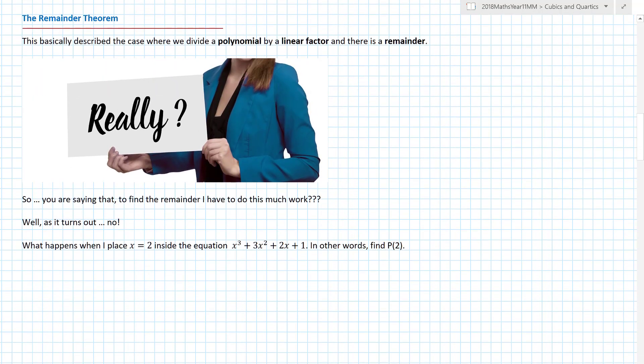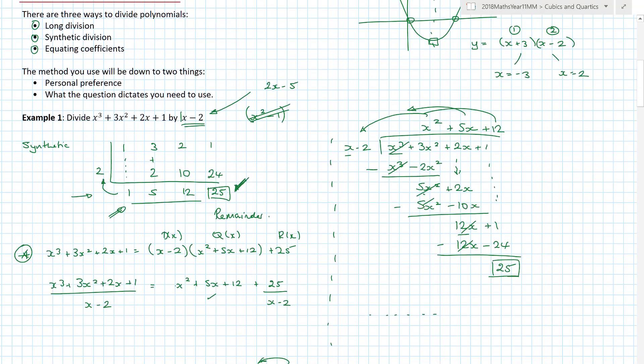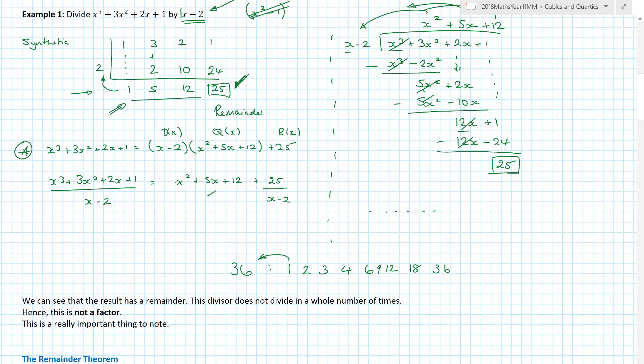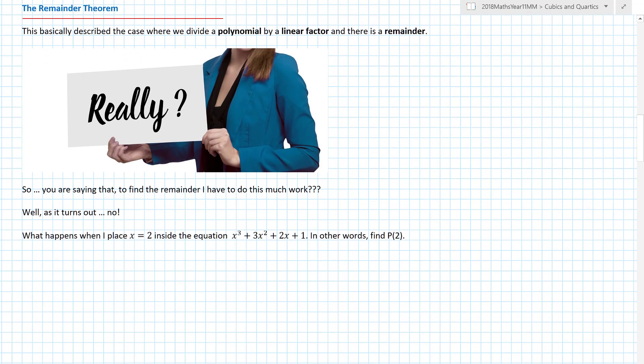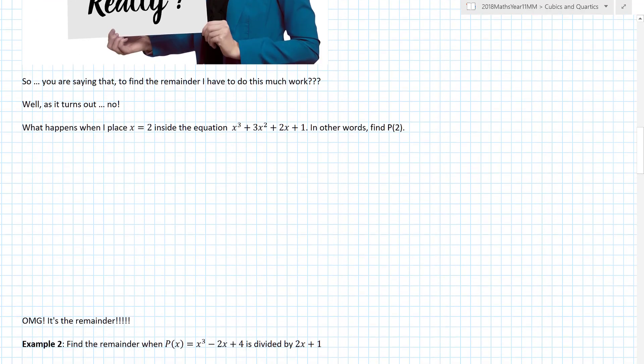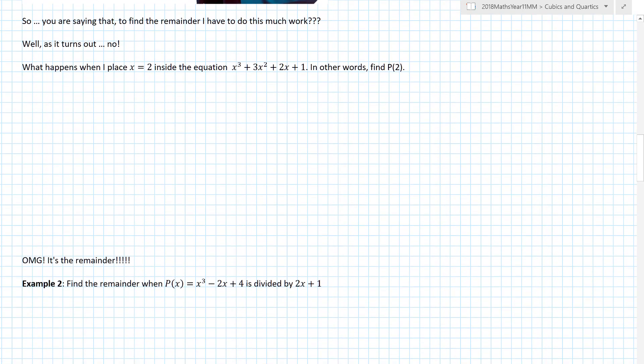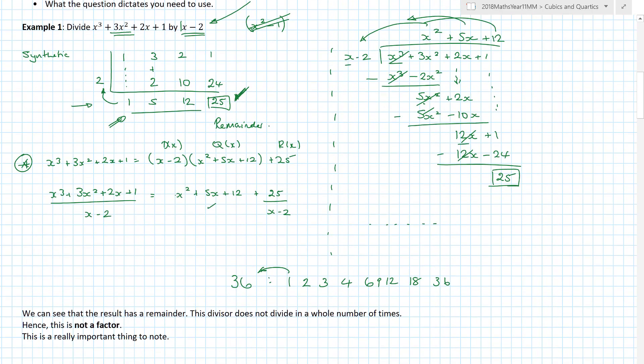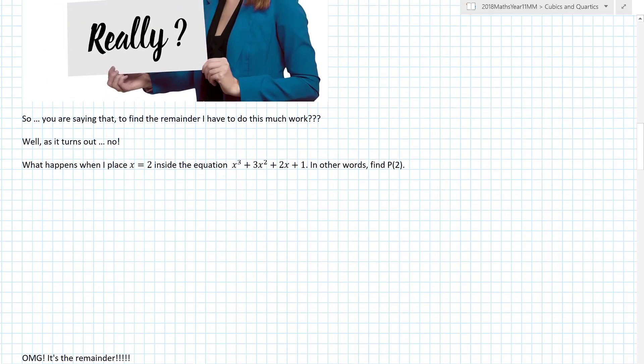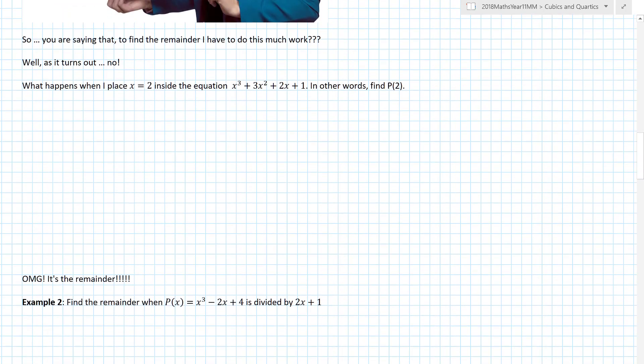The remainder theorem basically describes the case where we divide a polynomial by a linear factor and there's a remainder. I've divided a polynomial by x minus 2. I've got a remainder. I'll just use a remainder theorem. Okay, that's a lot of work to find a remainder. Well, as it turns out, there's a quicker way. If I actually put x equals 2 into that same equation, look what happens.